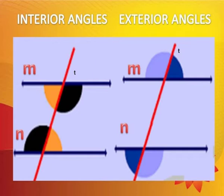Exterior angles: in this figure there are two lines M and N with a transversal line T. Exterior angles means angles that lie exterior to both the lines. Here in this figure, angles that lie exterior to both M and N are called exterior angles.